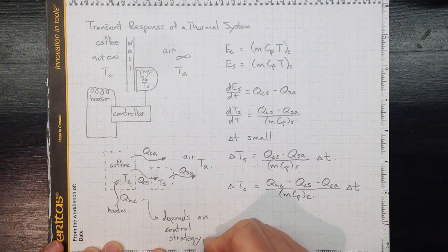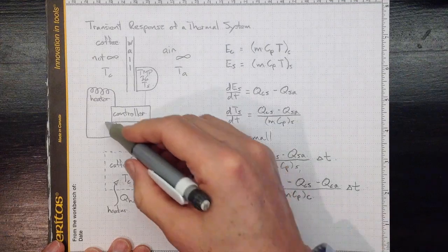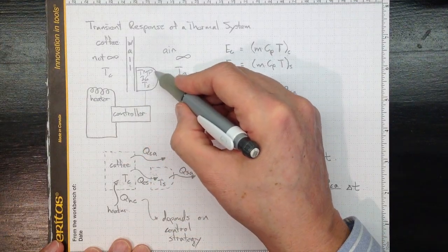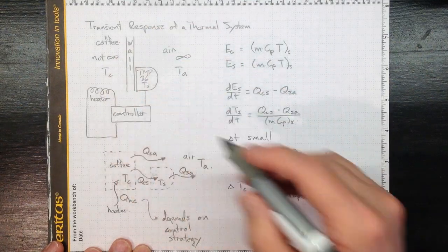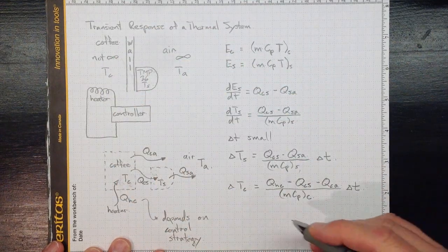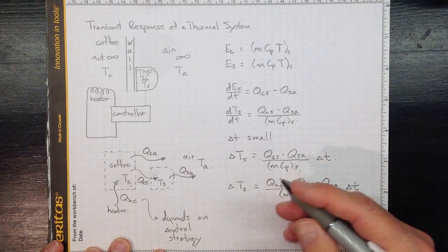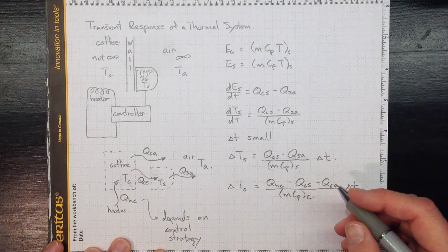So our control strategy might be something as simple as turn the heater on whenever the temperature registered here is too cold and warm the coffee back up. Then when the coffee warms up enough, turn it off again. That's a fairly simple control strategy, one that's used with household thermostats and things like that.